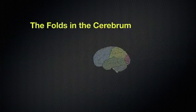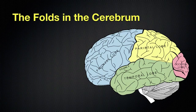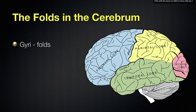But before I talk about that, let's talk about the folds in the cerebrum. When we're talking about gyri, we're talking about the folds. You can see here in this brain, we have all these little folds that go all throughout the brain — those are called gyri. If you're dealing with one of them, you say gyrus.